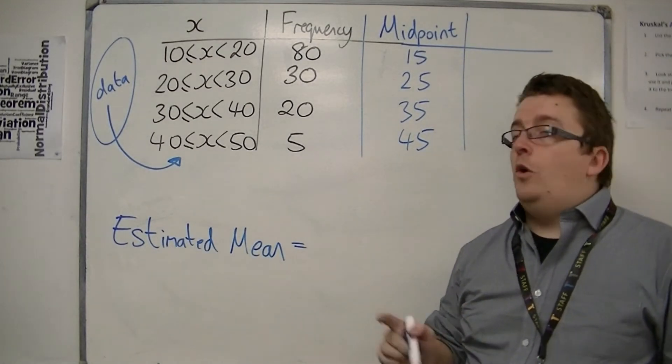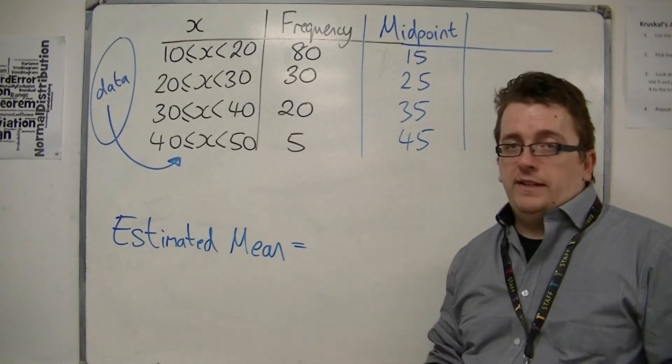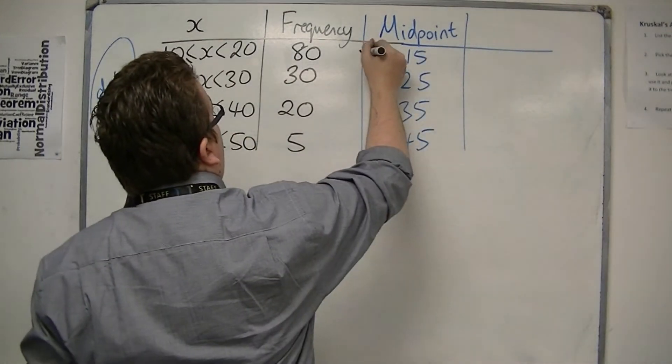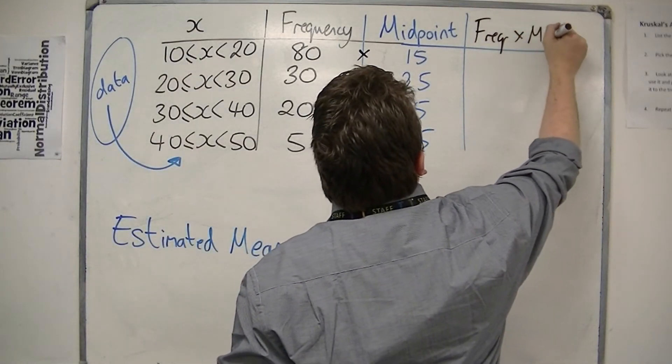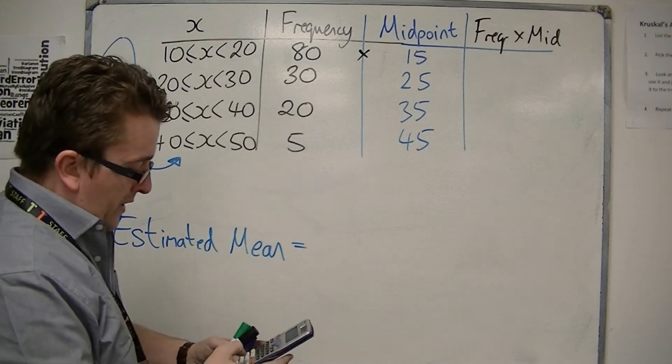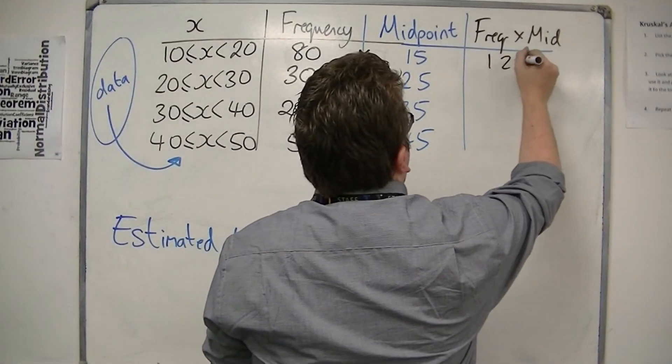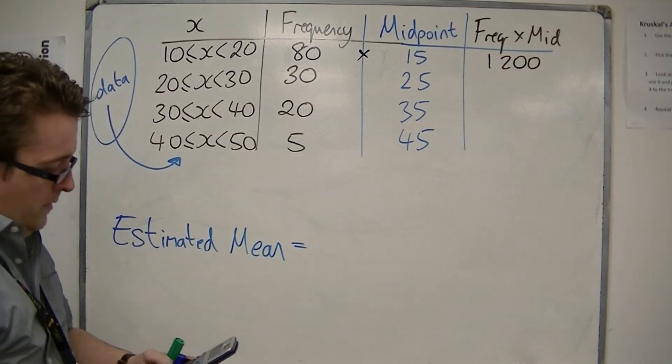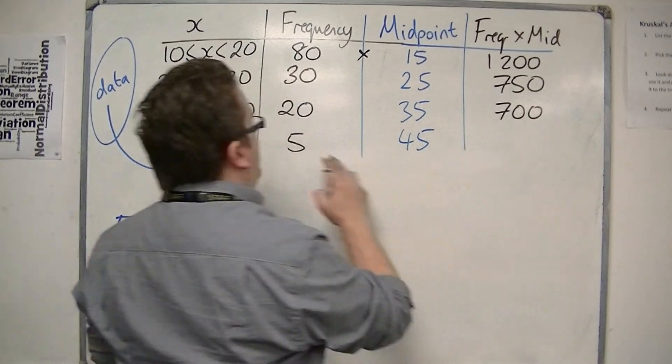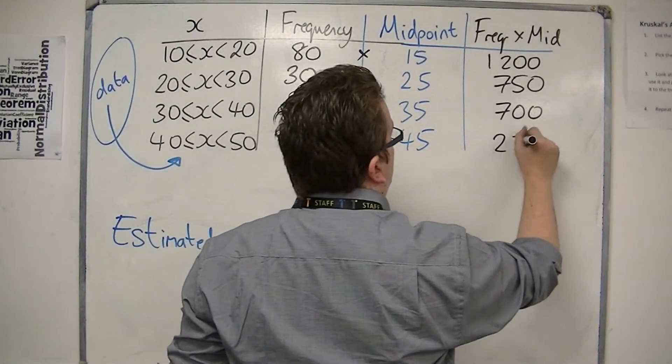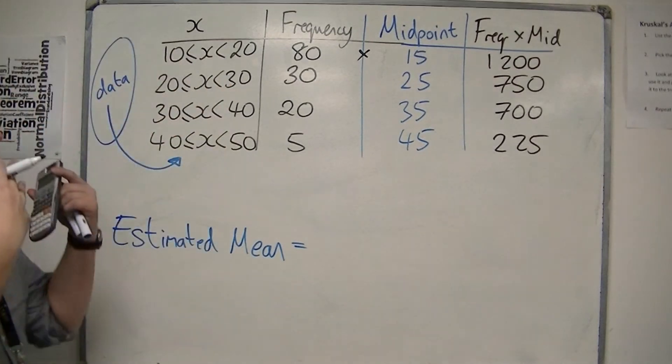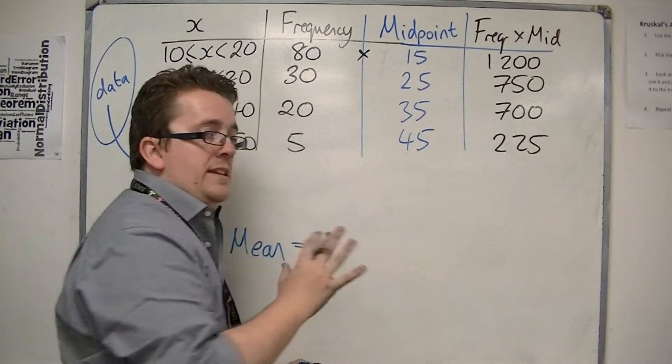So let's say now that I've got 80 15s, effectively. I've got 80 of these 15s in my list. So I would multiply these two together. So I'm going to get a frequency times midpoint column. So we do 80 times 15, okay, so 1200. Then we've got 30 times 25, it's 750. Then we've got 20 times 35, that's 700. And then 5 lots of 45, which is 225. So I've got my estimates. I've added them all up.